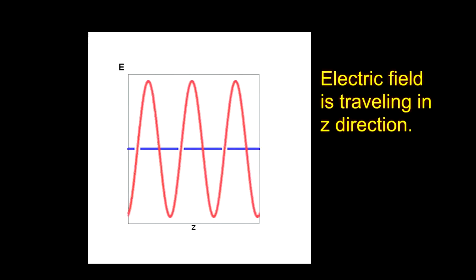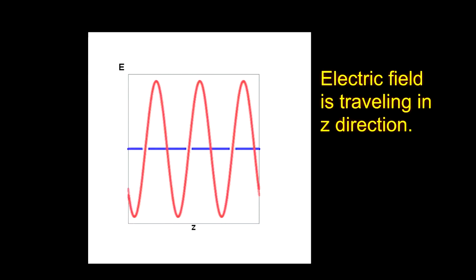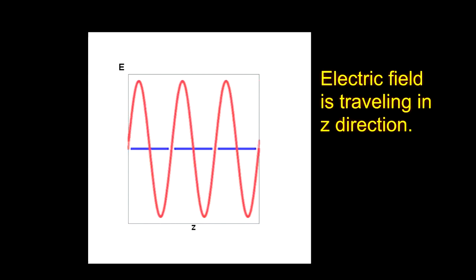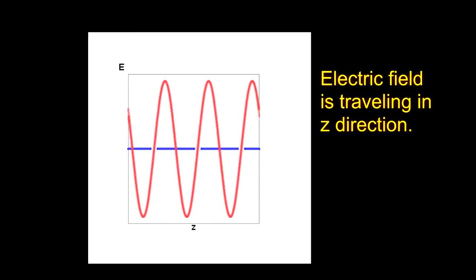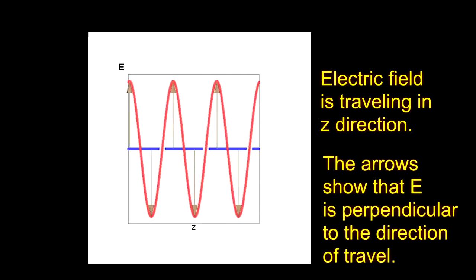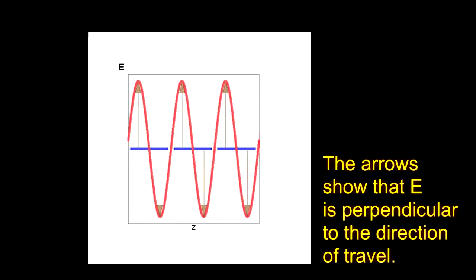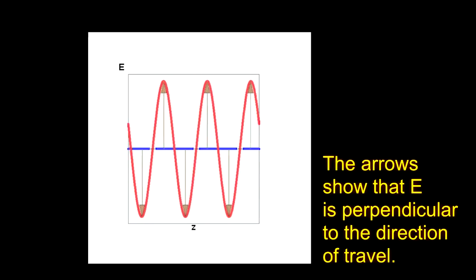The solution of the wave equations produces traveling electric and magnetic waves that are always perpendicular to the direction of travel. I can add little arrows to show the direction of the electric field. In this picture, the wave travels along the z-axis and the electric field is perpendicular along the x-axis.